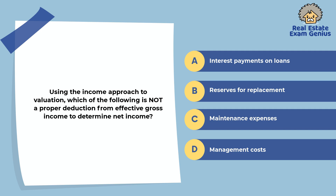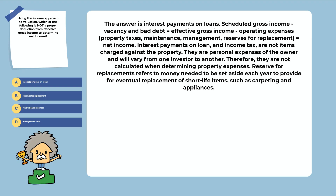Using the income approach to valuation, which of the following is not a proper deduction from effective gross income to determine net income? Interest payments on loans, reserves for replacement, maintenance expenses, or management costs. The answer is interest payments on loans. Scheduled gross income minus vacancy and bad debt equals effective gross income; minus operating expenses equals net income. Interest payments on loans and income tax are not charged against the property — they are personal expenses of the owner and vary from one investor to another.